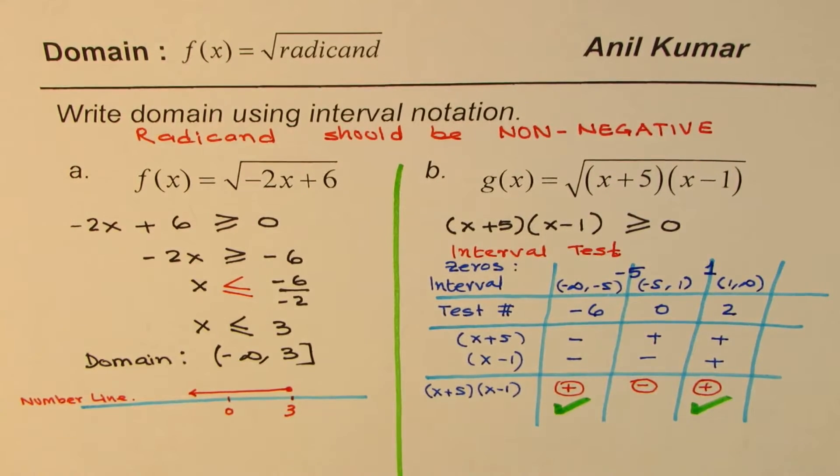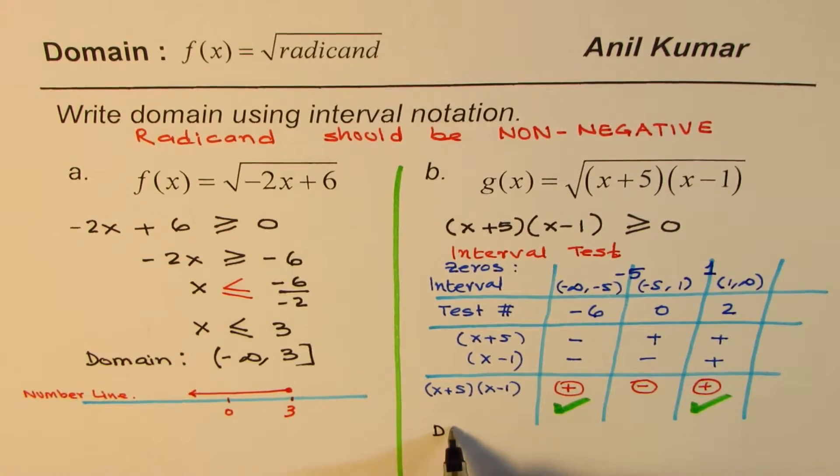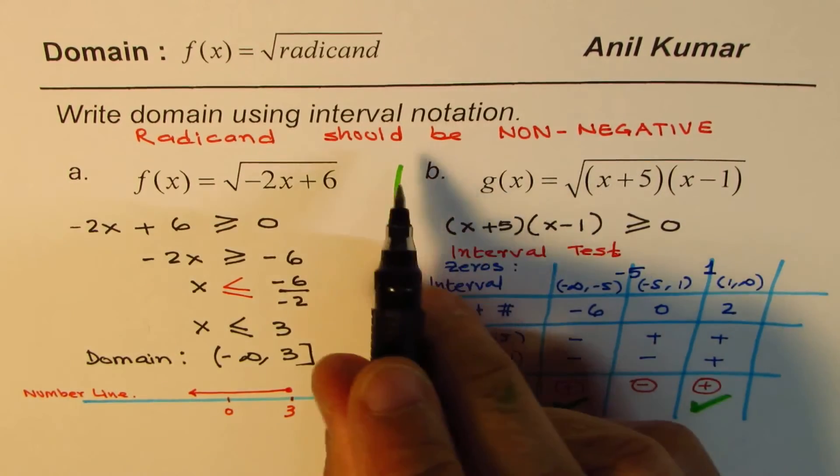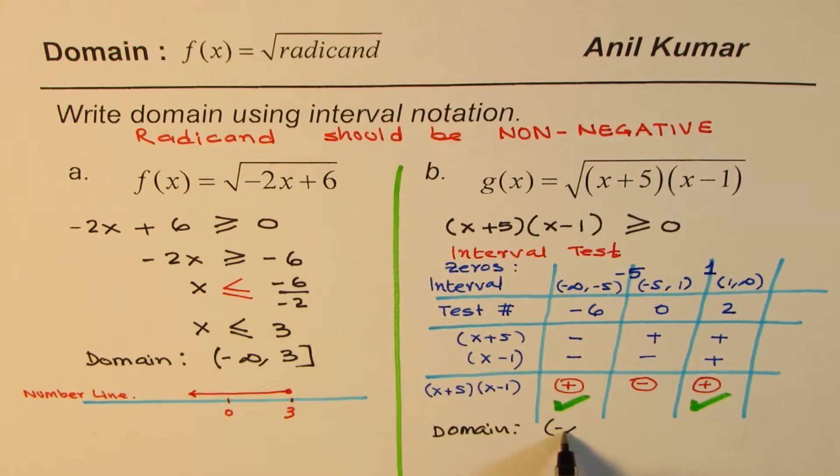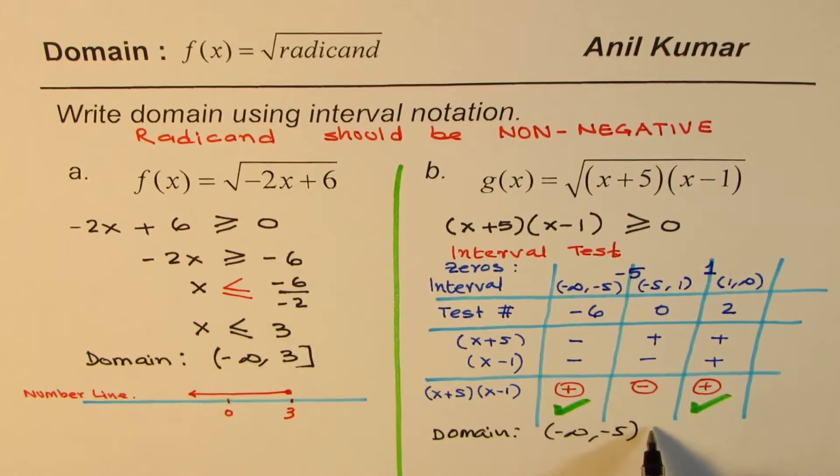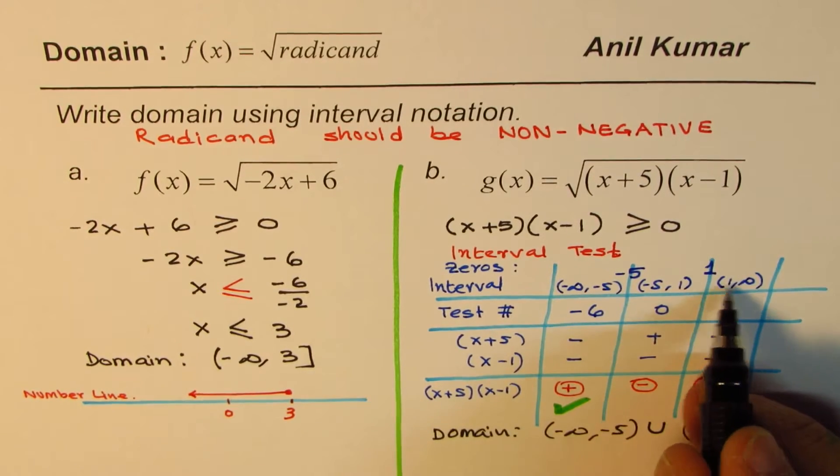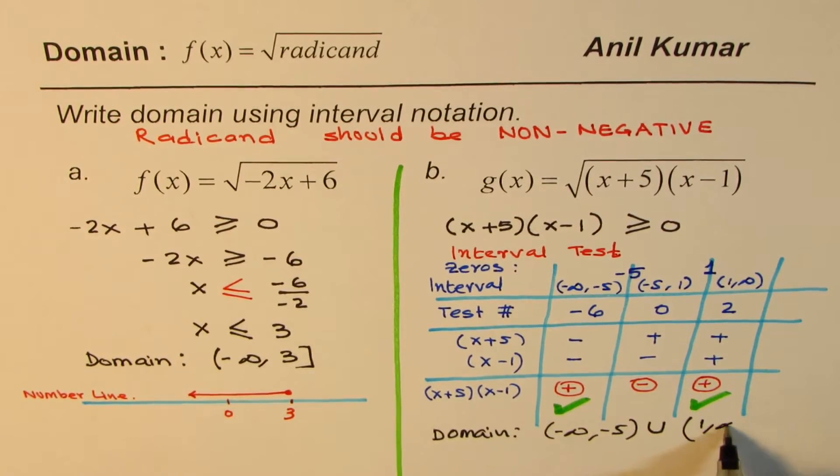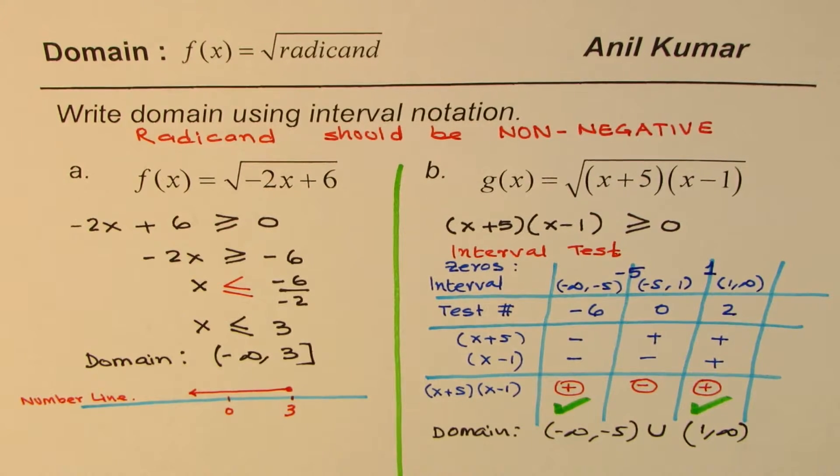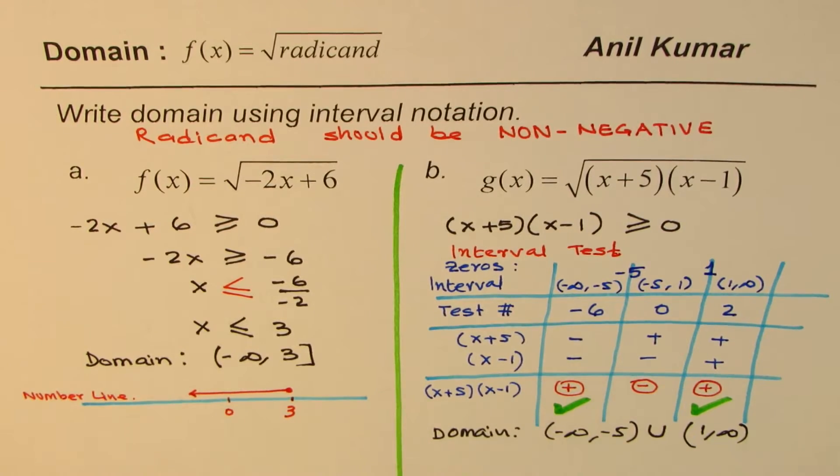Now we can clearly write down the domain. We say the domain of this function is in interval notation from -∞ to -5, union 1 to ∞. That becomes the domain of the function. This we did using interval test - this is the algebraic method.